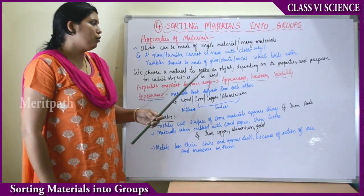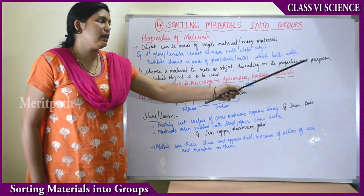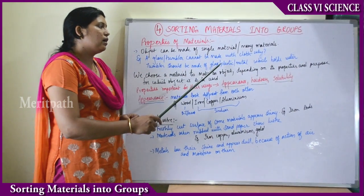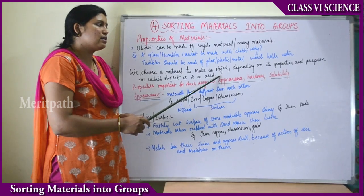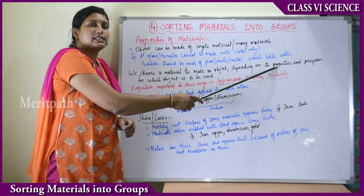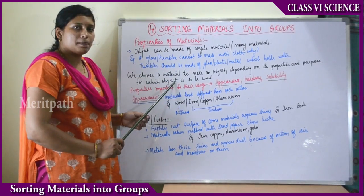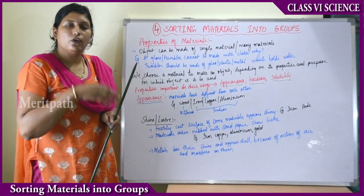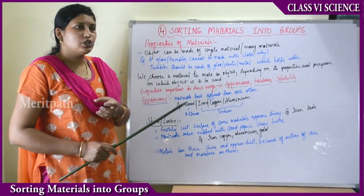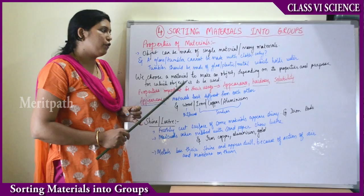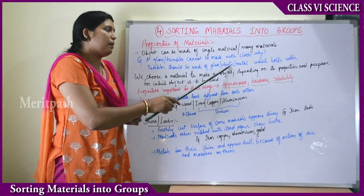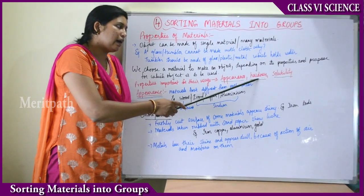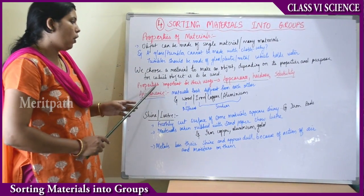We choose a material to make an object depending on its properties and the purpose for which the object is used. For example, what material do we choose to make a glass — glass, plastic, or stainless steel? The property considered was hardness, and the purpose was to drink water. If we made a glass from cloth, the cloth cannot hold water because it is soft, not hard.